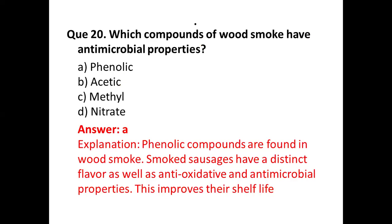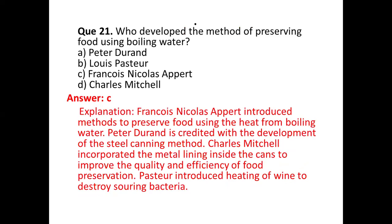Question number twenty: which compounds of wood smoke have antimicrobial properties? Options are: (a) phenolic, (b) acetyl, (c) methyl, (d) nitrate. The correct answer is option (a) phenolic. Phenolic compounds are found in wood smoke; smoked sausages have a distinct flavor as well as antioxidative and antimicrobial properties, which improves their shelf life.